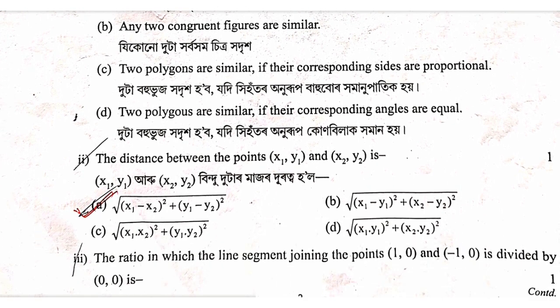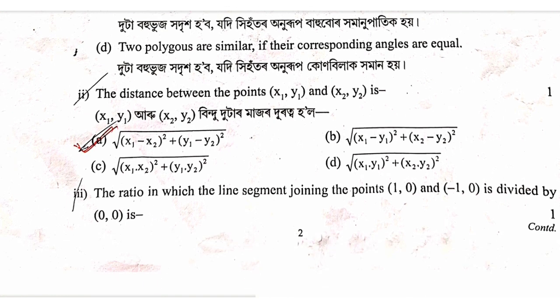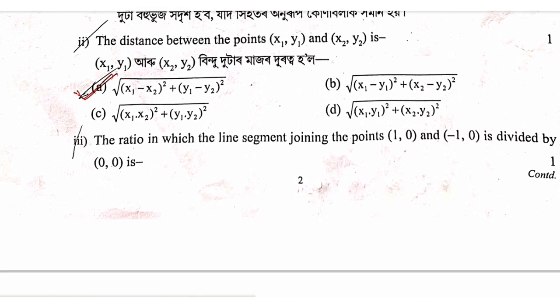The distance between the points x1, y1 and x2, y2 is given by the distance formula: the square root of x1 minus x2 whole square plus y1 minus y2 whole square.